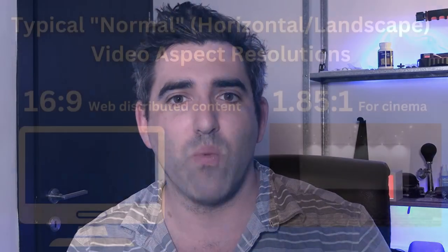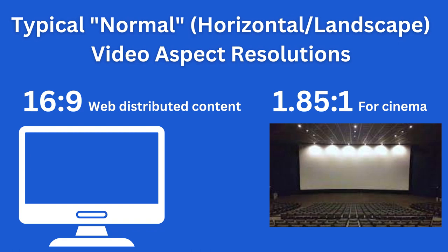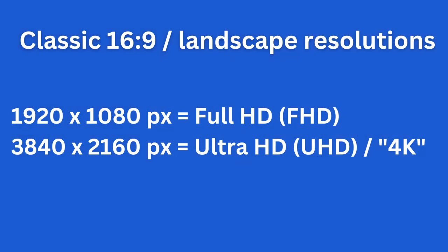Vertical video is basically an aspect ratio that produces that kind of video. Aspect ratio refers to the ratio between the pixels going across and the pixels going up and down the screen. The typical aspect ratio for web-distributed video content has been 16 to 9. An example of a 16 to 9 aspect ratio resolution is 1920 by 1080 pixels, which is also known as Full HD or FHD.